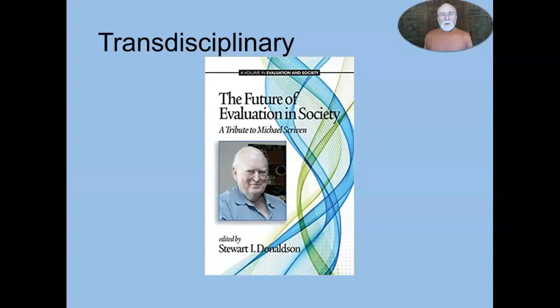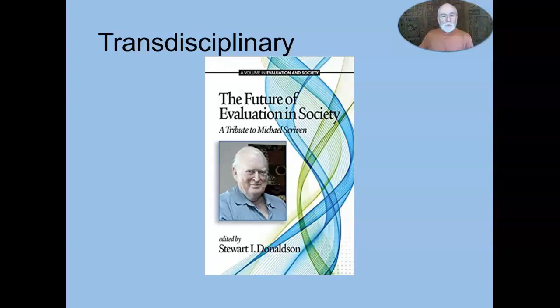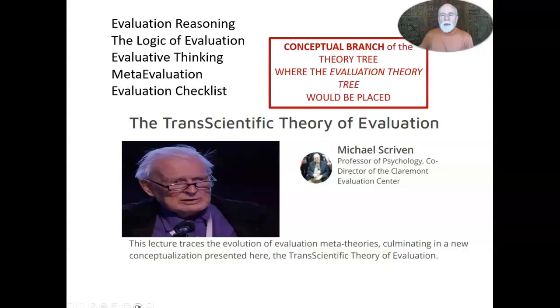Michael Scriven has been conceptualizing the entire field as a transdisciplinary field, like statistics and philosophy, that cuts across and serves other disciplines. In his chapter in the new Evaluation Roots book, he talks about a trans-scientific theory of evaluation. This builds on his long-time interest in supporting evaluative reasoning, evaluative judgment, the logic of evaluation, evaluative thinking, meta-evaluation, and his comprehensive evaluation checklist. Again, I'll return to this momentarily.